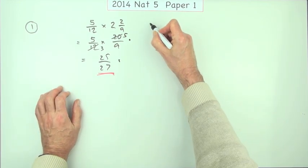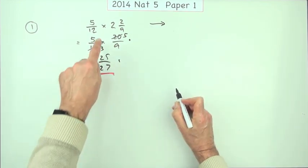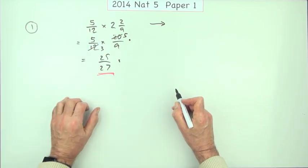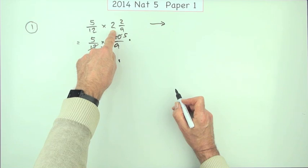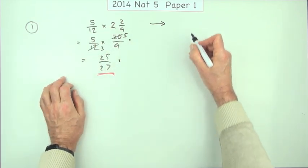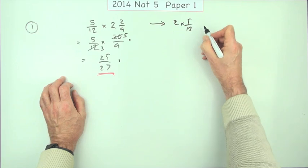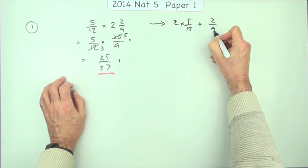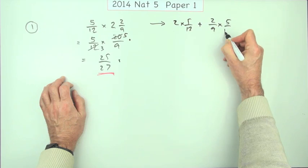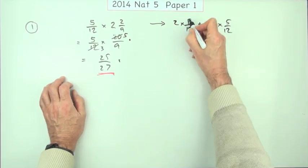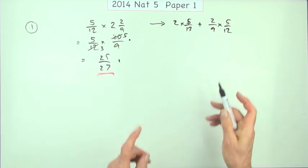Now, you could have taken that longer route of actually carrying out the multiplication by the mixed number, because after all that means you've got two of them and two ninths of them. You could have said, well, I'll have 2 times 5/12 and I'll have 2/9 of 5/12.